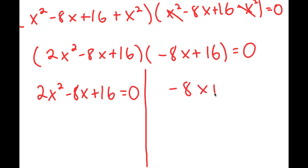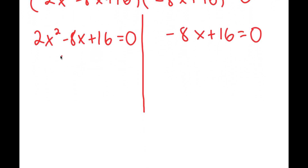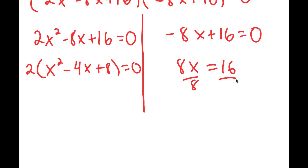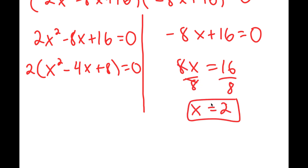From here, I'm going to factor out 2, so I get 2 times x squared minus 4x plus 8 is equal to 0. And for this equation, I have 8x is equal to 16. So if I divide both sides by 2, I get x equals 2. That's one solution.